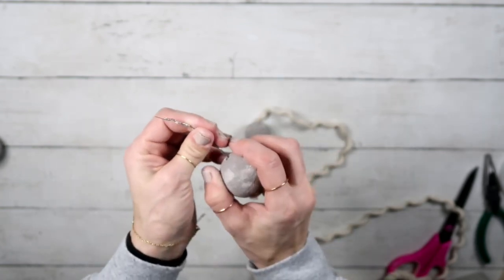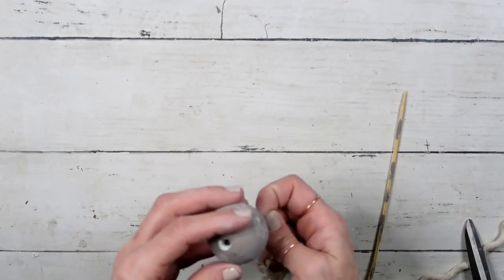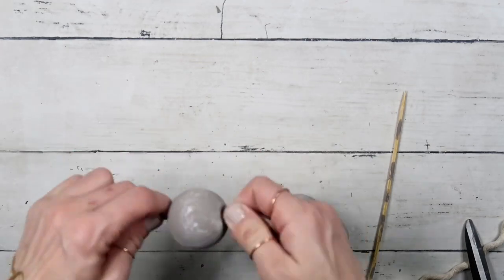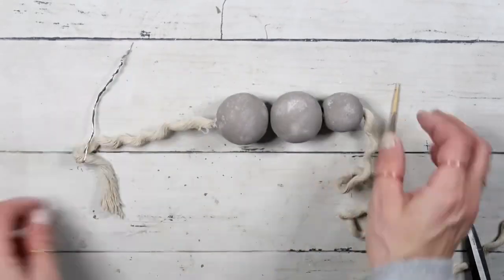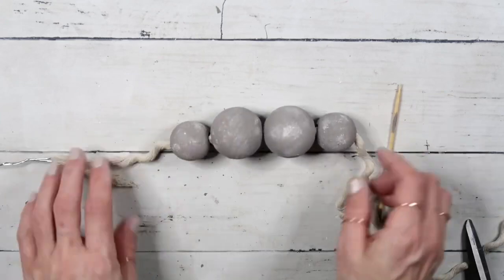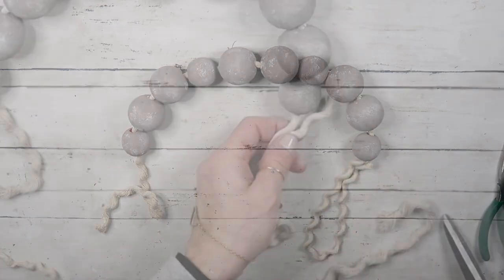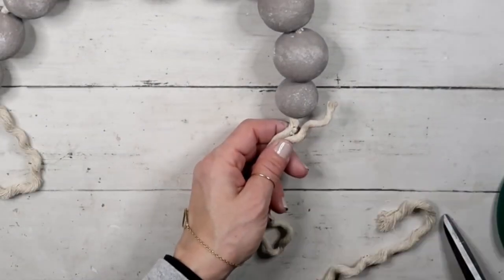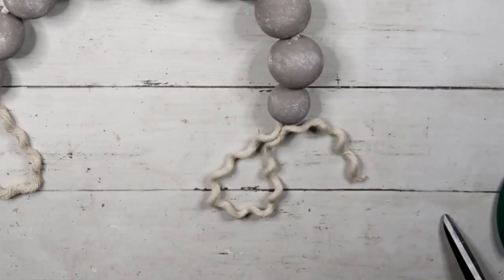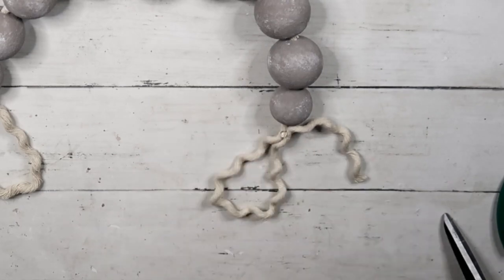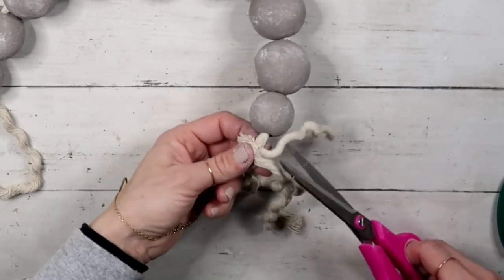When I started using ping pong balls, I realized I need to create a bigger hole because of the nautical rope. So I went back and created a bigger hole on all of them. Now I am just gently pushing my created needle through the holes and putting all the beads on the rope.